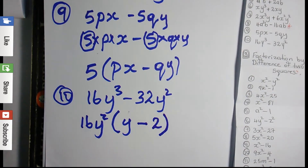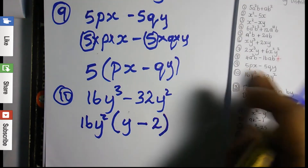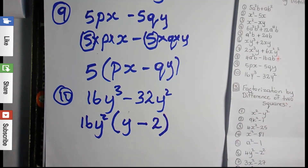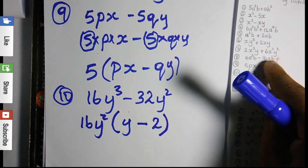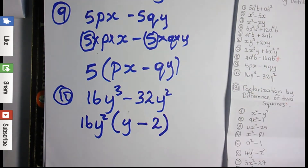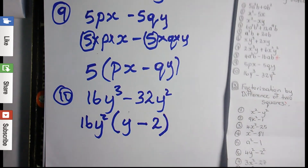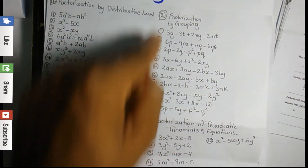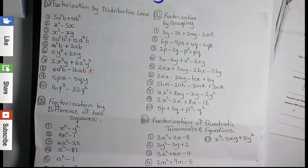Question 8 involves an application of difference of two squares, which is why it was left out — we'll factorize question 8 when we cover that topic. The next video will be on factorization by grouping.